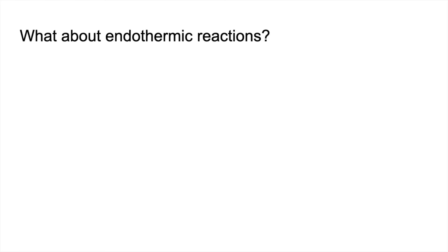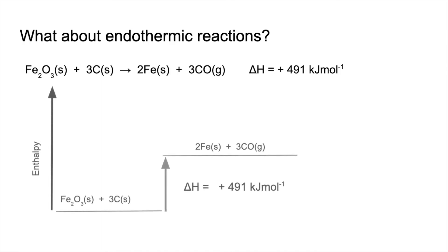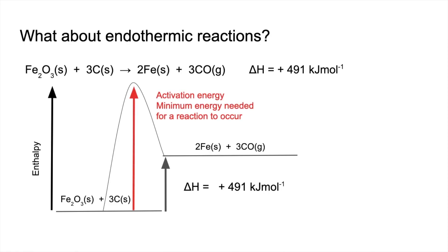We'll finish by looking at an example of an endothermic reaction. This reaction takes place in a blast furnace when iron is extracted from its ore: iron oxide is heated with carbon. You can see from the positive sign in front of the enthalpy change value that this is an endothermic reaction. The basic enthalpy diagram shows a positive enthalpy change — an upward arrow from the reactants up to the products. But we've got to overcome the activation energy barrier to get the reaction to go, represented by that curved connector. The activation energy is shown with a red arrow going from the reactants all the way up to the peak.